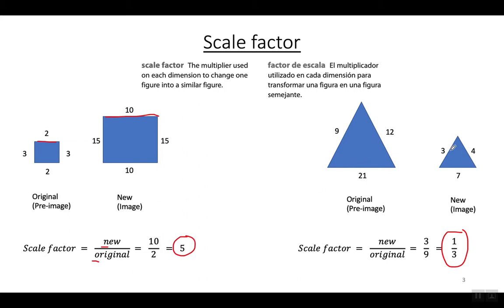En este ejemplo tengo un triángulo — estamos empezando con este triángulo y se está poniendo más chiquito. Para encontrar el factor de escala tengo que comparar dos lados correspondientes. Siempre se pone la medida del lado nuevo arriba y el original abajo. En este caso sería 3 sobre 9, y cuando lo simplifico, 1 sobre 3 o 1 a 3. Eso sería el factor de escala.